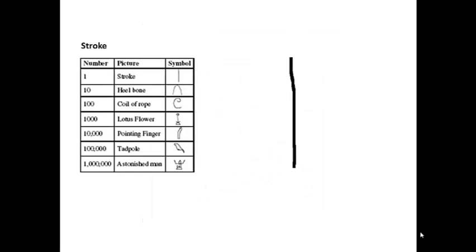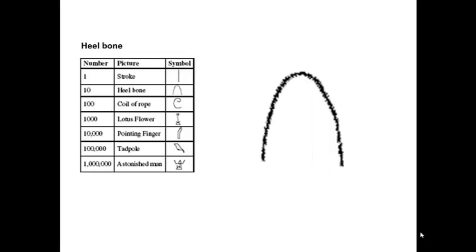The first symbol is the stroke, which is one. The second symbol is the heel bone, which is ten. Now we don't have any ancient Egyptians around to talk to, so these are our best guesses at what these symbols might stand for — not the numeric value, but what they are, like heel bone and such. Or you can think of them as our nicknames for the symbol.